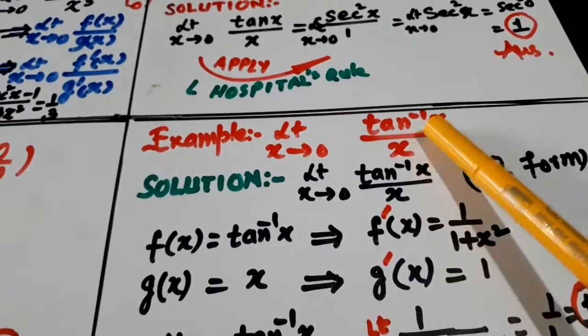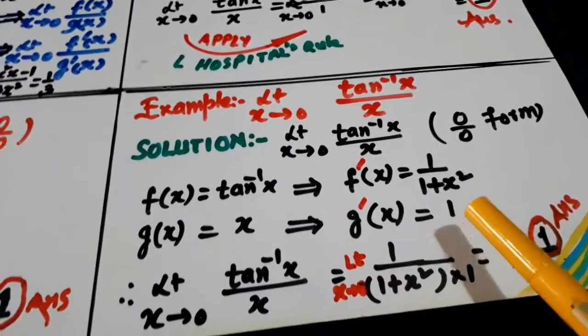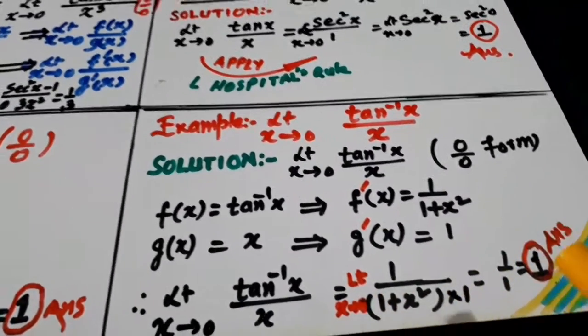Take the derivative of tangent inverse x. It is 1 over 1 plus x square. Take the derivative of x. It is 1. Put it here. Put x equal to 0. You will get 1.